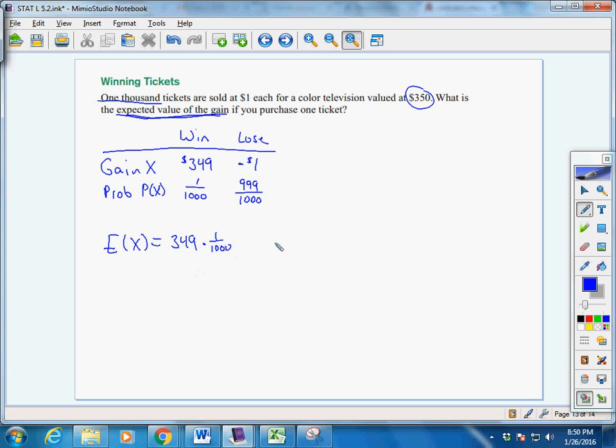349 times 1 over 1,000, and we say negative 1 times 999 over 1,000. And if you figure that all out, we get negative 65 cents.